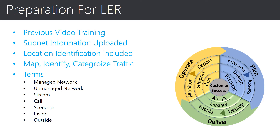This video will build upon information that was previously introduced in earlier training videos for the Call Quality Dashboard. In order to realize the full benefits of the Location Enhanced Reports, you will need to have already uploaded your network subnet information into the Call Quality Dashboard portal. The network subnet information needs to include not only subnets, but location names which are associated with the subnets and roles on your network. This information is going to be key for the identification of network source traffic as well as network destination traffic and then categorization of that traffic. You should also be familiar with the terms listed here. If you are not familiar with the terms or need a refresher, you will want to view the Call Quality Dashboard Basics video. You will find a link to all of the Skype Operational Framework training resources and videos at the end of this presentation.